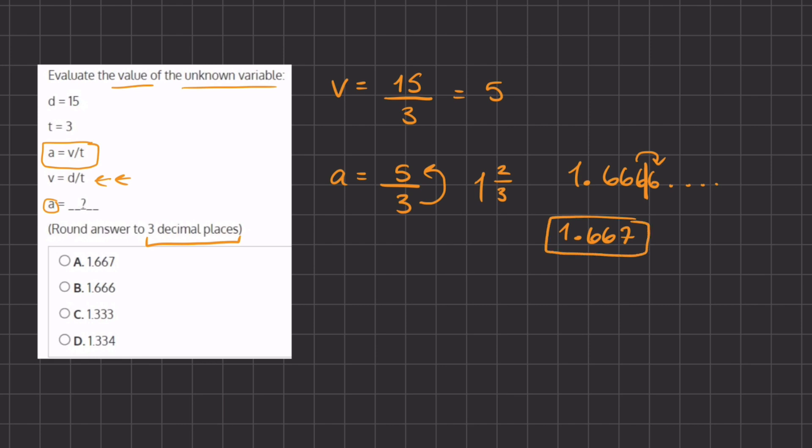This is going to be our answer for the value of a. If we take a look at our answers, that is going to be A. Don't get confused with B, which is 1.666 - in this answer they just did not round this last number. Our final answer is going to be A.